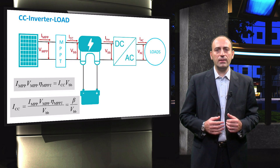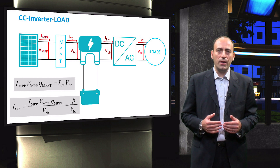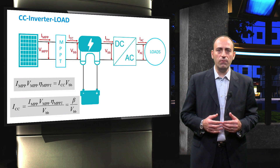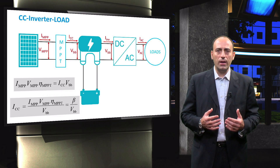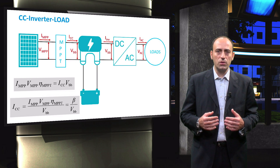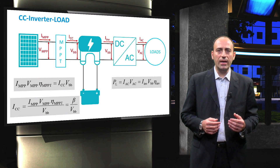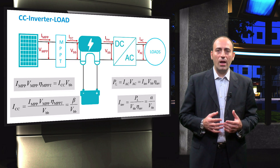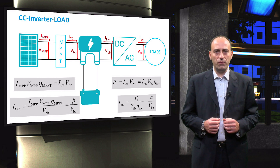Next, let us look at the right-hand side of the system topology. Here, the power required by the loads, PL, is equal to the product of AC current and AC voltage leaving the inverter. This is, in turn, equal to the power at the input side of the inverter derated by the inverter efficiency. Thus, from the following expression, the current at the input side of the inverter is obtained. Similarly to the previous step, to simplify, the variable alpha is used instead of the ratio between the power required by the loads and the inverter efficiency.